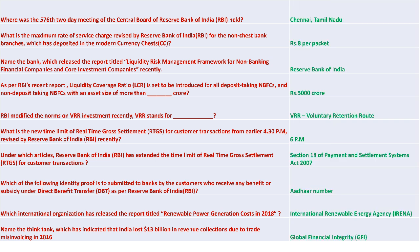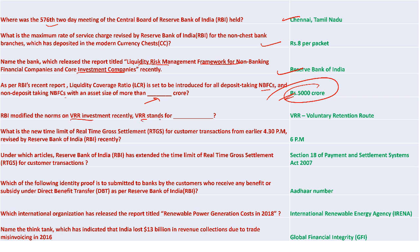The 576th two-day RBI Board meeting was held in Chennai. The maximum rate of service charge by RBI for non-CHESS bank branches that deposit soiled currency is 8 rupees per packet. RBI released a Liquidity Risk Management Framework for non-banking financial companies and core investment companies. The Liquidity Coverage Ratio is set to be introduced for all deposit-taking NBFCs and non-deposit-taking NBFCs with assets above 5,000 crore. RBI modified the VRR (Voluntary Retention Route) norms. The new time limit for RTGS settlement was extended from 4:30 PM to 6 PM.